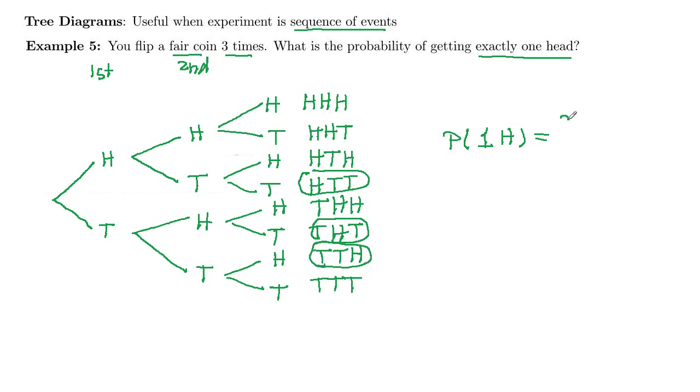So that's three possibilities out of eight. So three eighths chance that we would get exactly one head from tossing a fair coin three times.